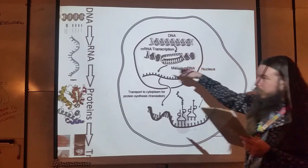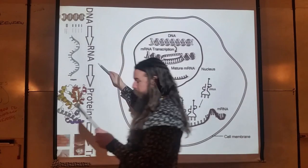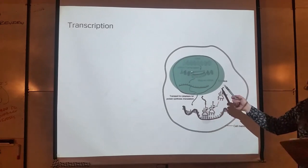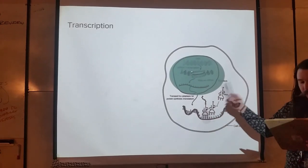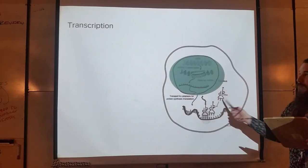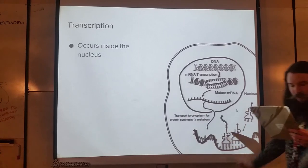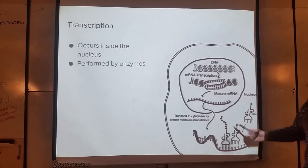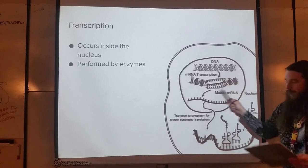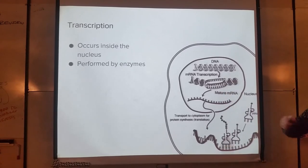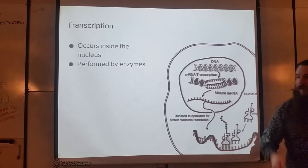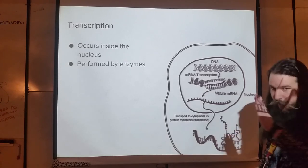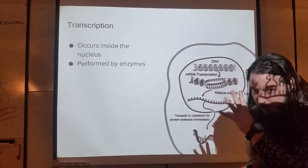We're going to start by talking about transcription. Transcription is the first arrow: DNA to mRNA. Transcription occurs here within the nucleus of the cell. The process is performed by enzymes in the nucleus — you don't need to know their names yet, but it's RNA polymerase for those dying to know.